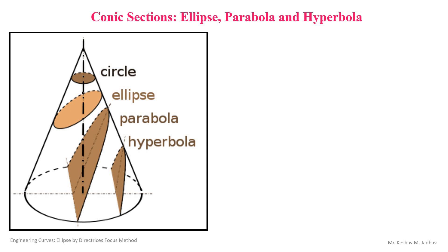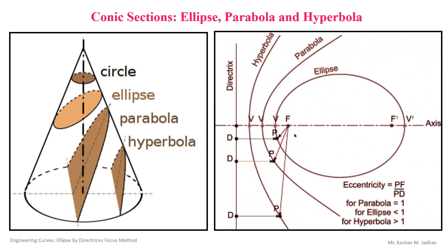These are the types of conic section curves and they can be differentiated by eccentricity. Here we have drawn three curves: ellipse, parabola, and hyperbola. The vertical fixed line is the directrix, and the axis is perpendicular to the directrix. Where the curve intersects the axis, that point is the vertex. The fixed point on the axis is called the focus. Eccentricity is the distance of a point P on the curve from the focus, divided by the shortest distance of that point from the directrix — that is PF upon PD — and this value is constant for all points on the curve.